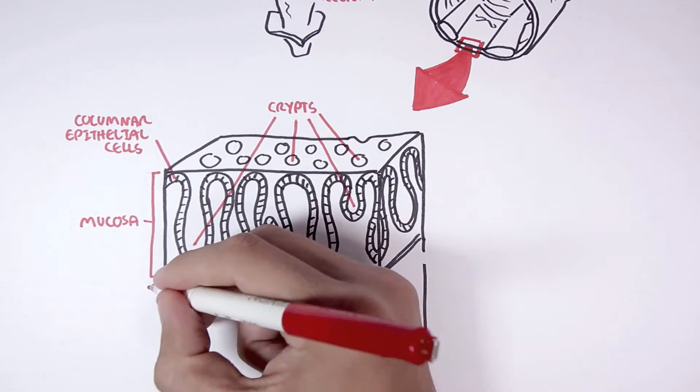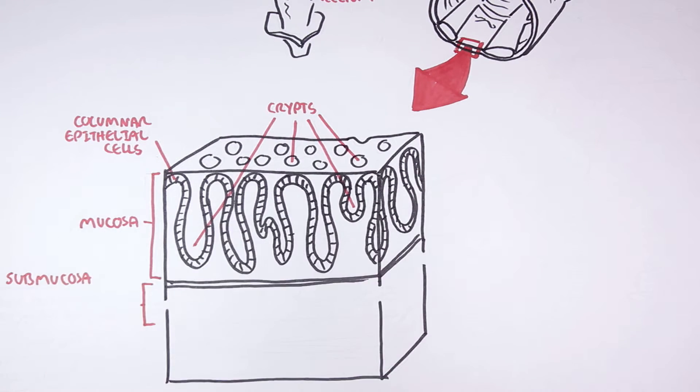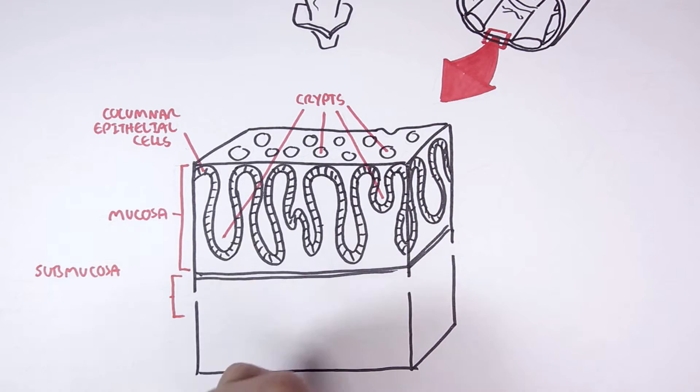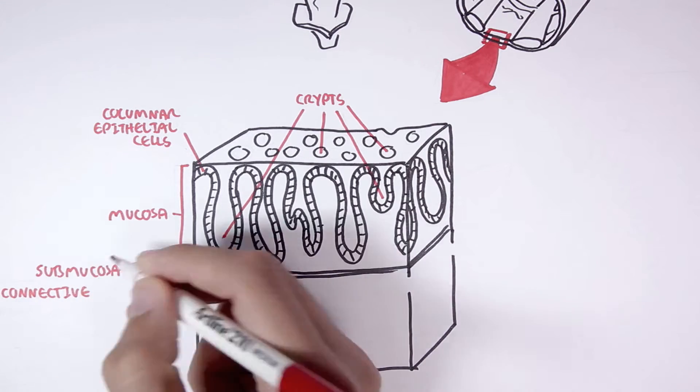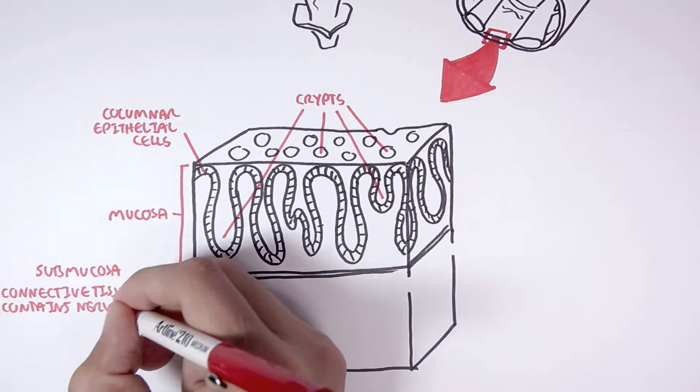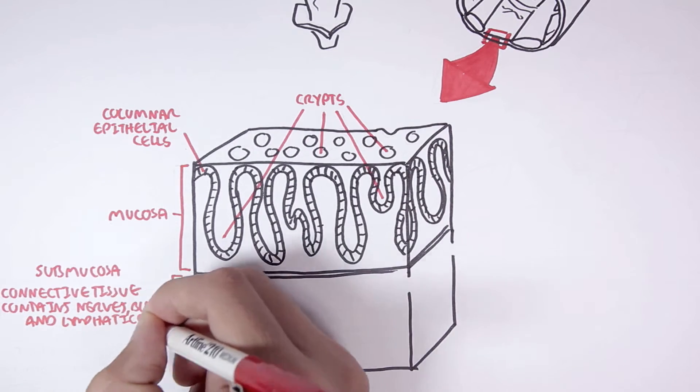The next layer is the submucosa, sub as in below, so below the mucosa. The submucosa is the connective tissue layer that contains nerves, blood supply and lymphatics.